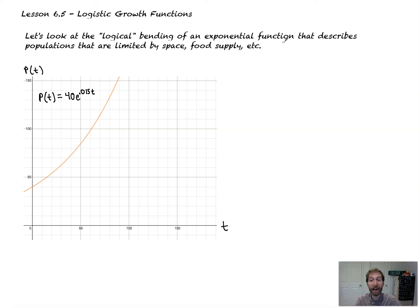Let's look at the logical bending of an exponential function that describes populations that are limited by space, food supply, etc. I've given you a standard exponential function here, P(t) = 40e^(0.015t). It's growing rather quickly. But that's not logical growth. What's logical is that a population is not going to keep growing and going on forever. If we had too many humans on Earth, eventually we'd run out of food and space.